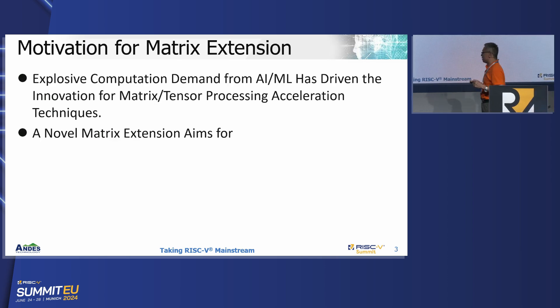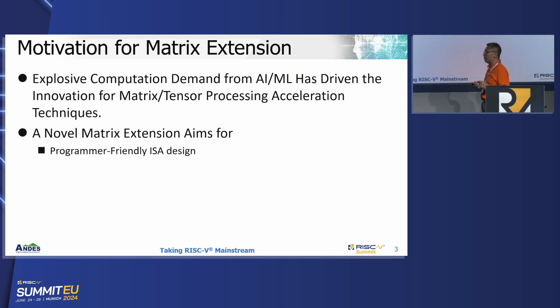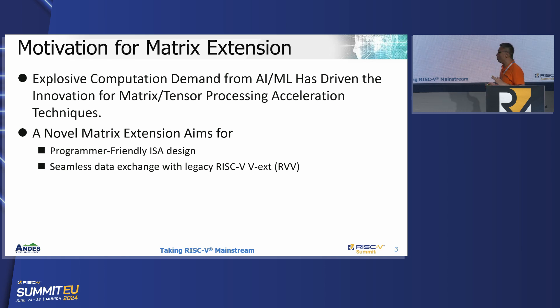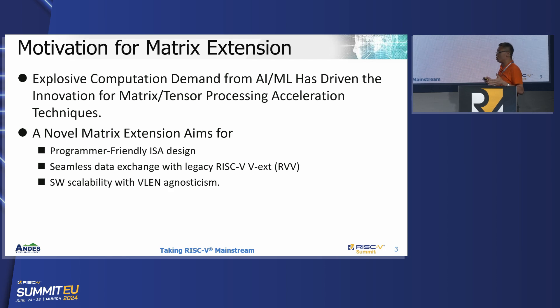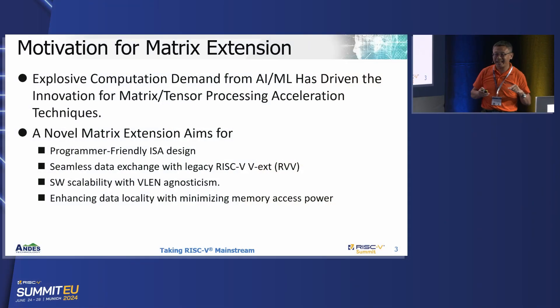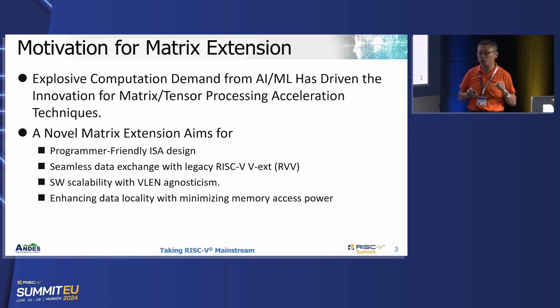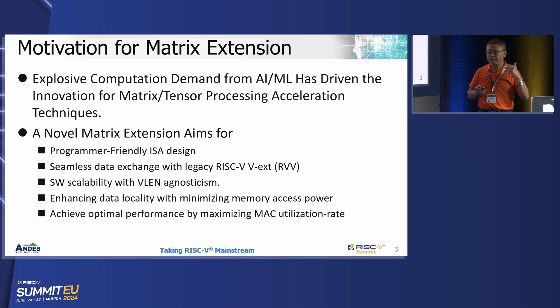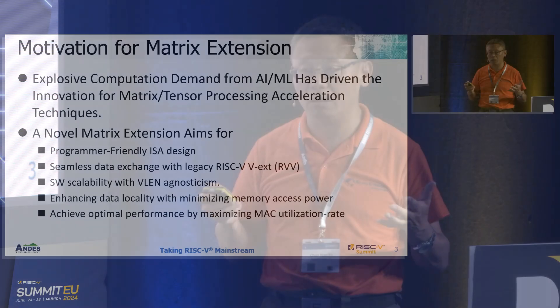It's no doubt that machine learning requires intensive matrix and tensor computation. That's why we need a new matrix extension that can provide a friendly programming model, and should be able to seamlessly exchange data with the legacy vector unit. It should provide source portability — source-level or binary-level — for field-agnostic use. It's crucial to keep data locality to maximize compute intensity and minimize bandwidth requirements. Based on this high compute intensity, you can expect that your MAC utilization rate in your kernel will be boosted and your workload cycles will shrink down.